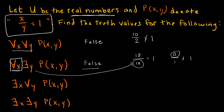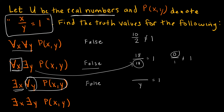Next: there exists some x such that for all y, x divided by y equals 1. This is false as well. We're saying there's just one fixed x value such that for any y I choose, I get 1. Say x is 15 — that works when y is 15, but if x is 15 and y is 32, that doesn't work. So this is false because we can't fix one x such that it's true for all y values.